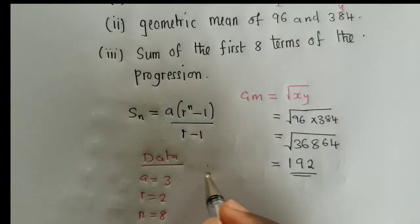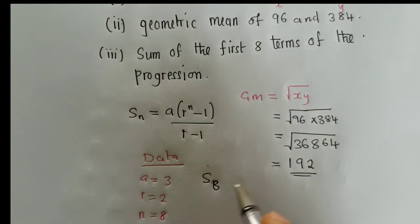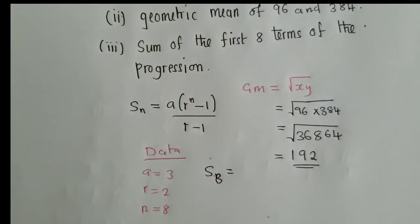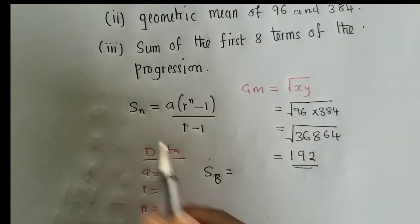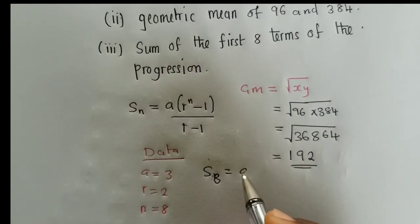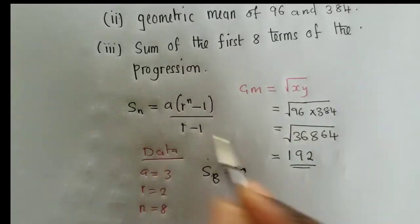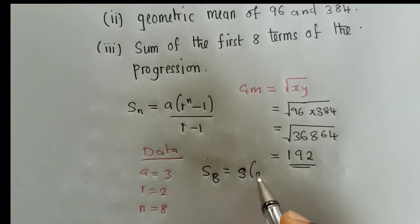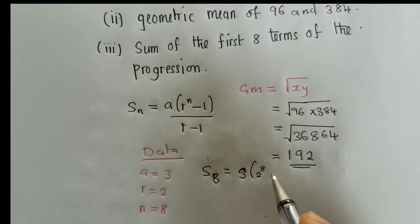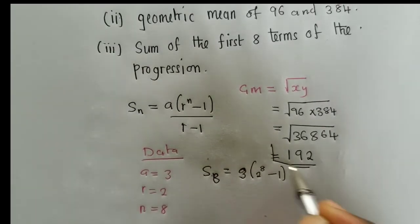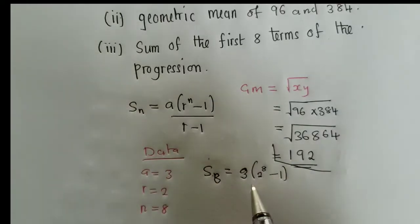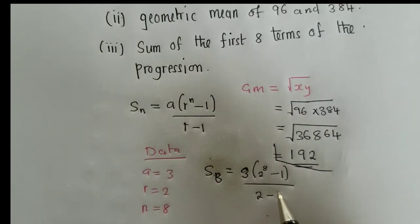So we shall say S8 is equal to... So we substitute 8 here. And we shall have a 3 here. Our r is a 2, 8 on n. Just like that. So I'm just substituting on this formula.